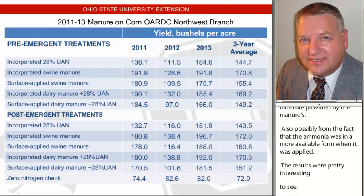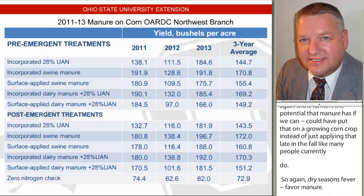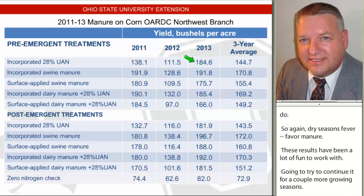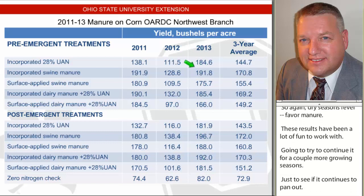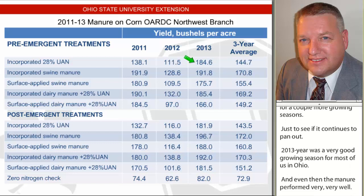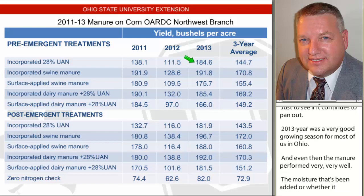These results have been a lot of fun to work with. We're going to try to continue for a couple more growing seasons just to see if it continues to pan out. The 2013 year was a very good growing season for most of us in Ohio, and even then the manure performed very, very well. Whether that's the moisture that's been added or whether it's an indication of the effect of the Dietrich toolbar going down through the center of the corn row — which is a bit of a tillage effect — I can't really be sure. But we're interested in just showing farmers the potential if we can figure out ways to better utilize livestock manure.